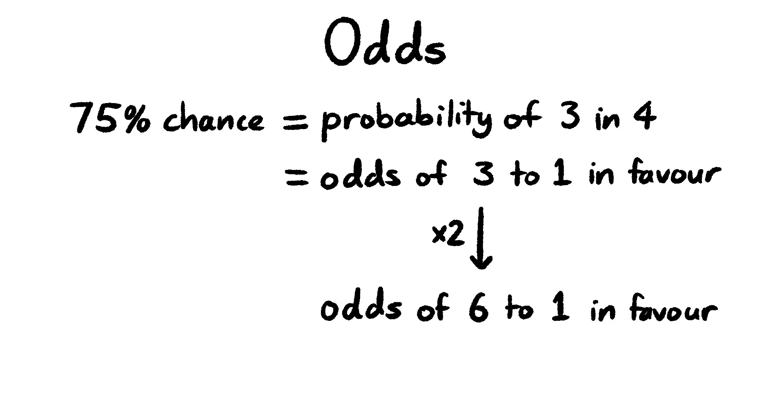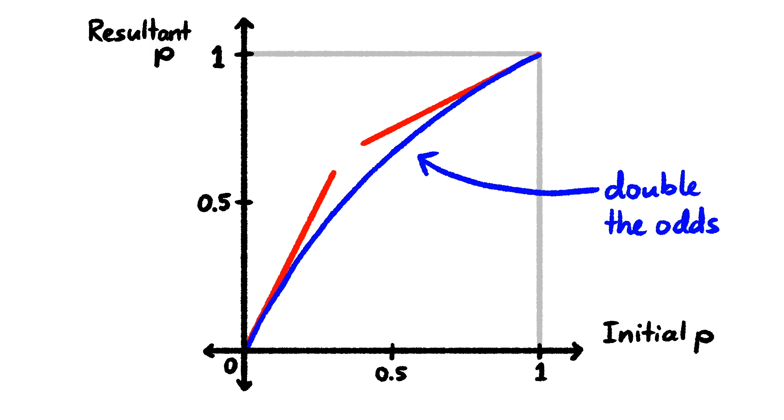For example, starting at 75%, twice the odds would become 6 to 1 in favour, which is 86%. The cool thing about this approach is that it works at both extremes. If the initial probability of success is small, then twice the odds is approximately twice the probability of success. But if the probability is close to 1, then twice the odds is approximately halving the probability of failure. In the middle there's a compromise. 50% probability is 1 to 1 odds, so twice the odds would be 2 to 1, which is a 2 in 3 chance of success.